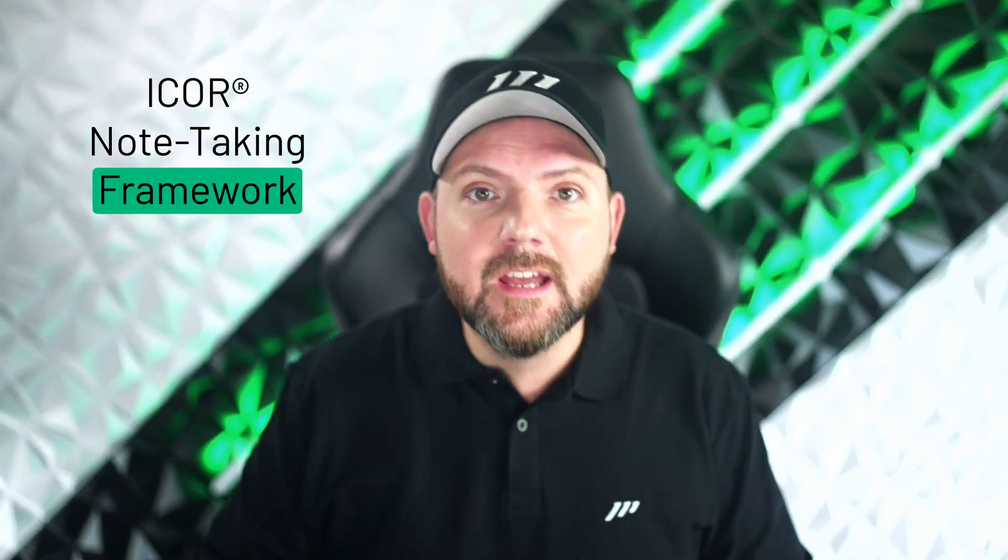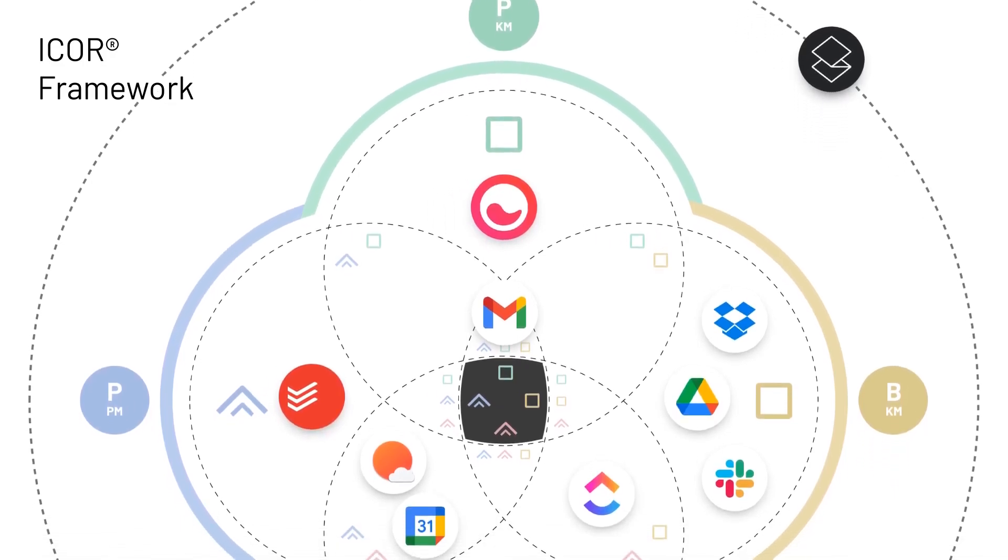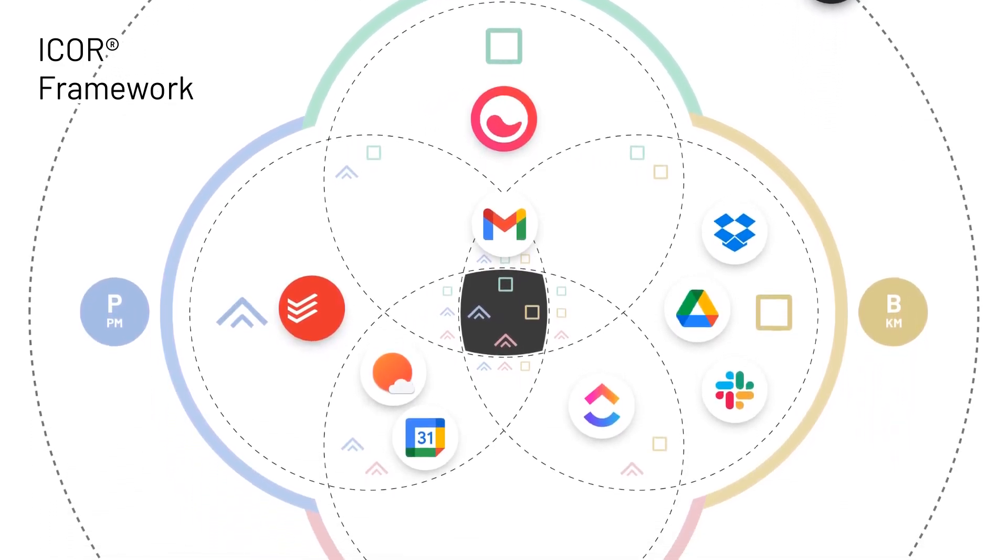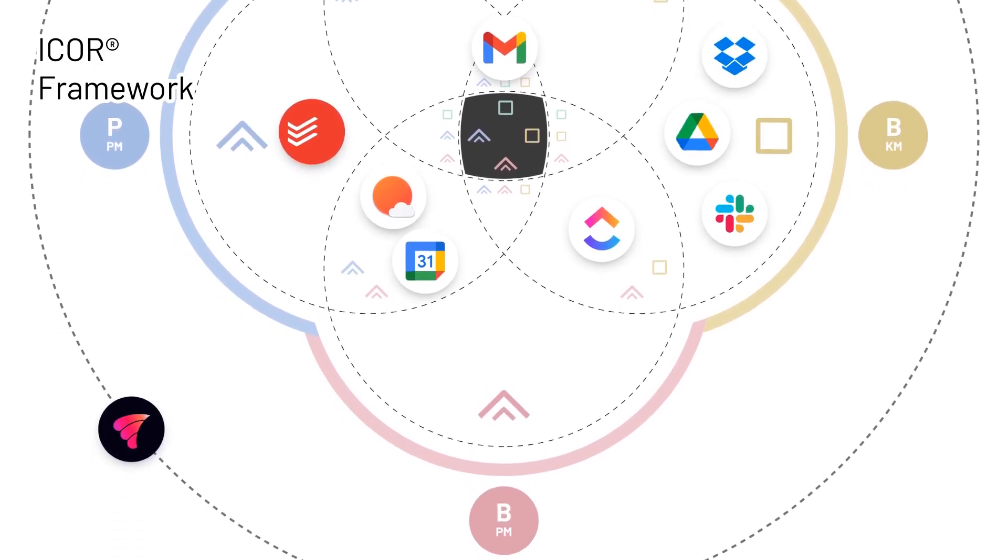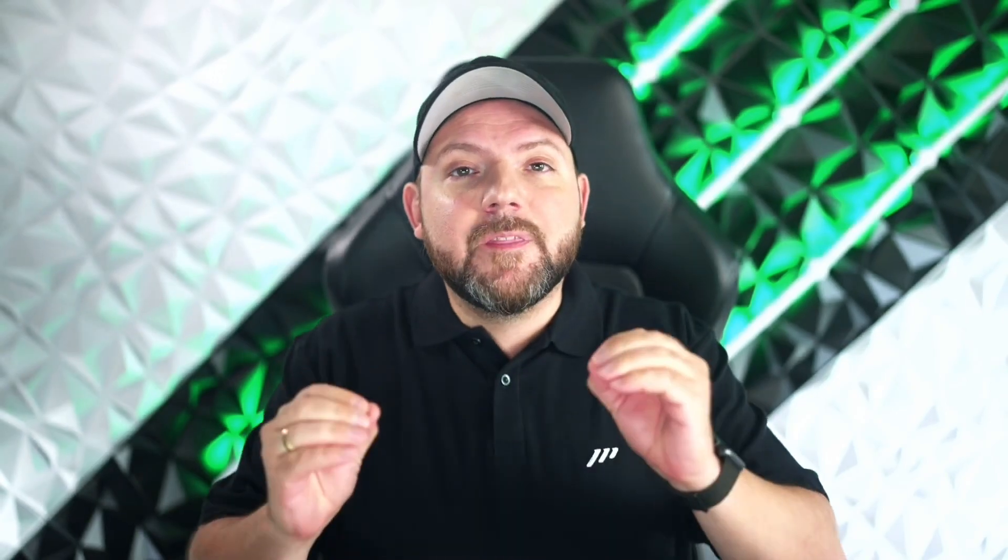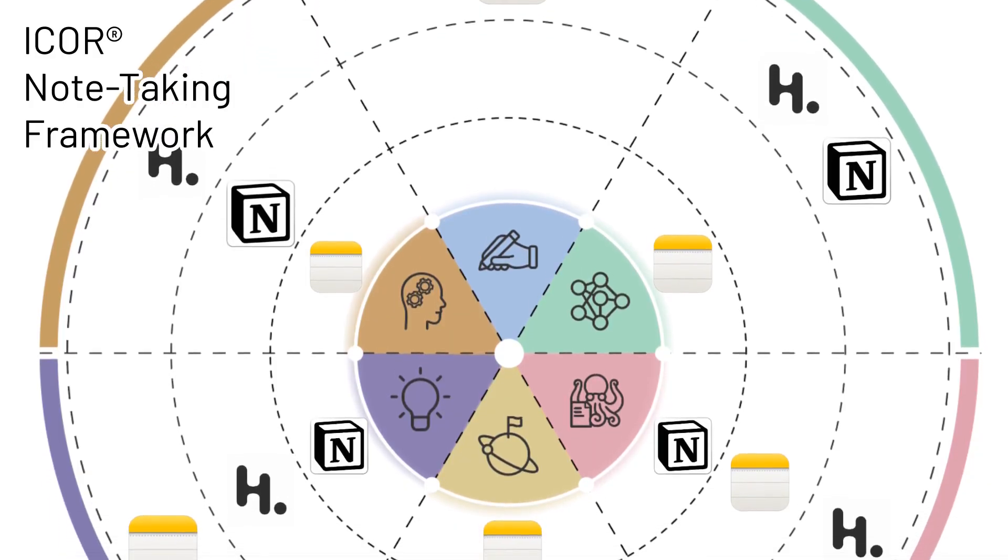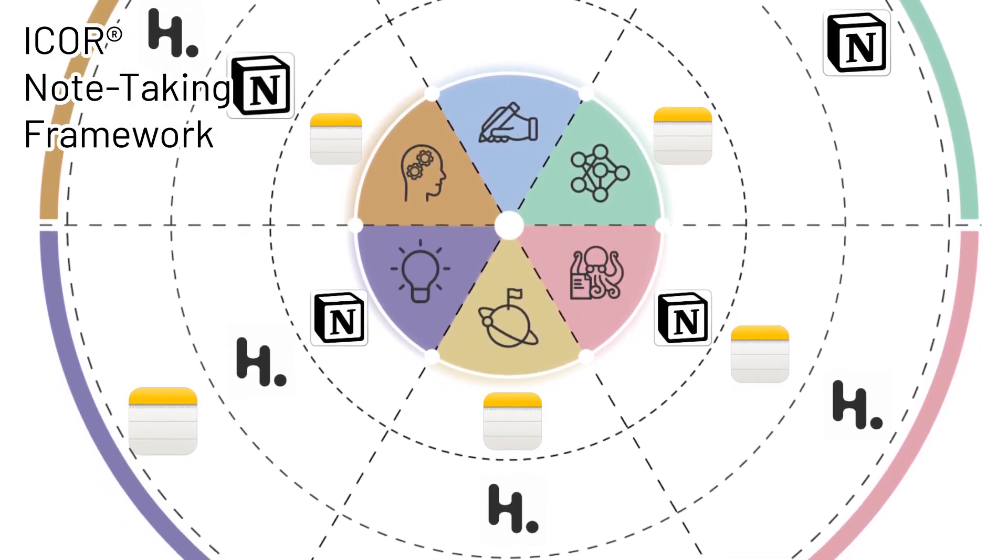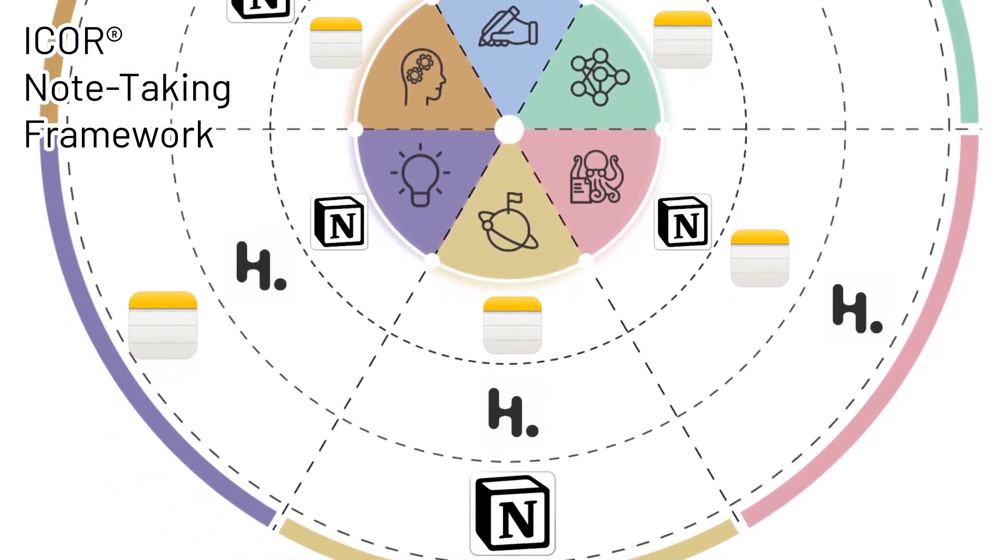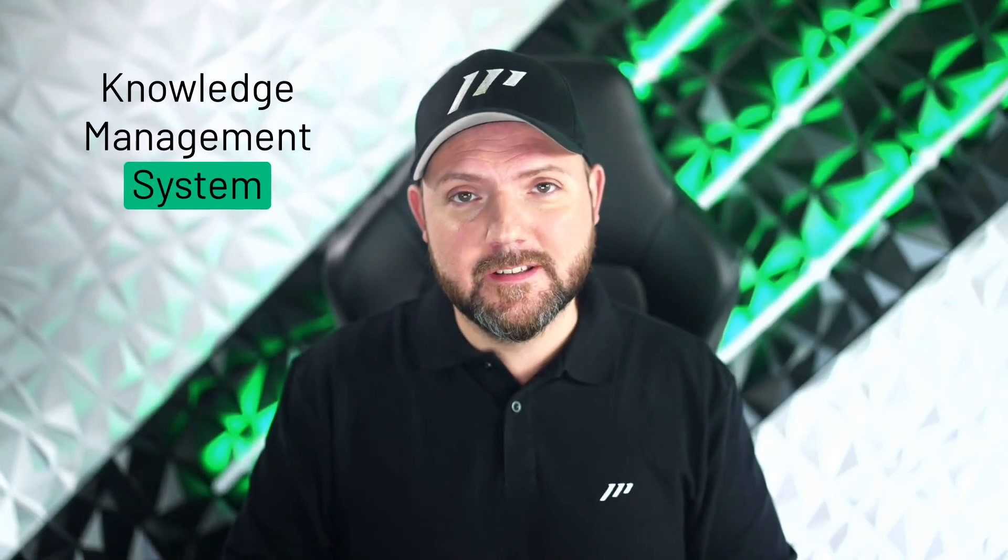It's called the iCore Note-Taking Framework. If you follow the Papables movement, you know the iCore framework that we have where you can lay out your tools to get a bird's eye view on the tools that you use in your productivity system end-to-end. And the iCore Note-Taking Framework is something similar that allows you to understand finally what the different note-taking tools are used for and which combination of note-taking tools you need to build up a highly efficient personal knowledge management system.